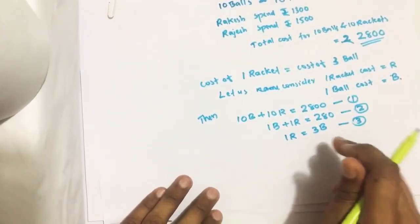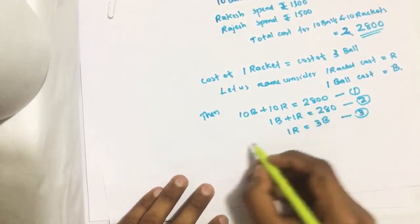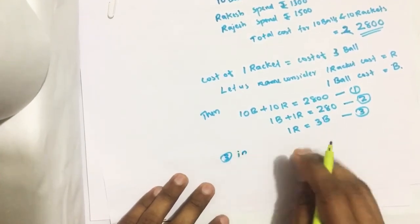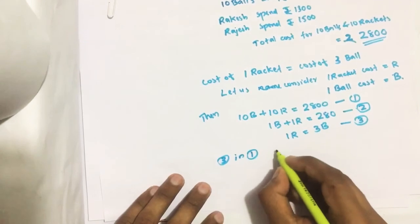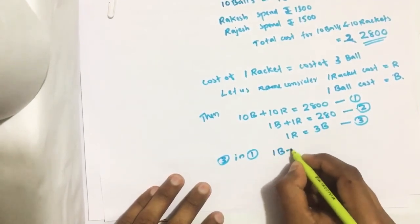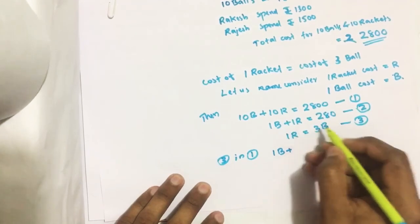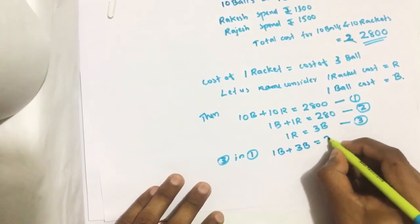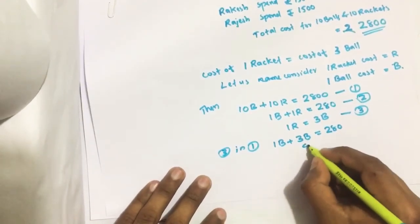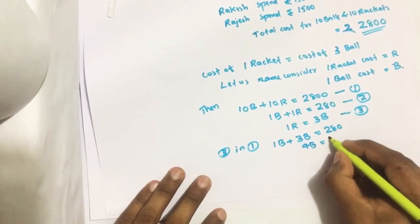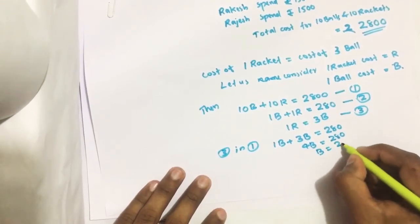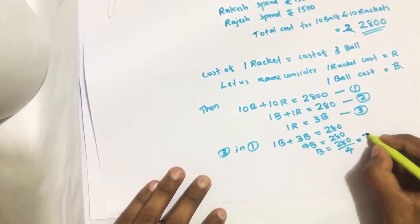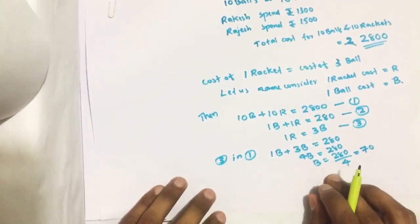Solving these two equations, we get the price of ball and racket. Put equation 3 in equation 1. Instead of one racket we put 3B. So one ball plus 3 ball equals 280, that means 4 ball equals 280. Each ball costs 280 divided by 4. How much? 70 rupees. So each ball costs 70 rupees.